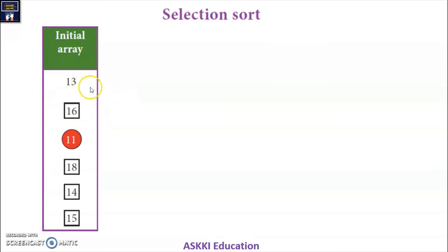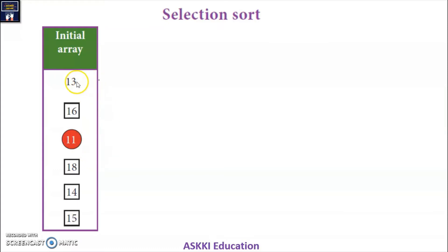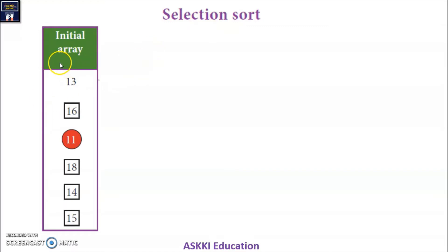There is a different exchange by comparing the values. When comparing the values, the smallest element in the position will be exchanged. So one exchange will happen at every pass. That is the difference between selection sort and bubble sort. In selection sort, the exchange will happen at the end of every pass. In the initial array, the value of the first element will be considered.